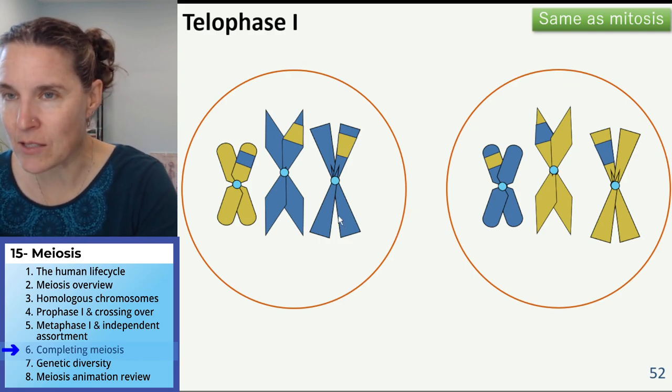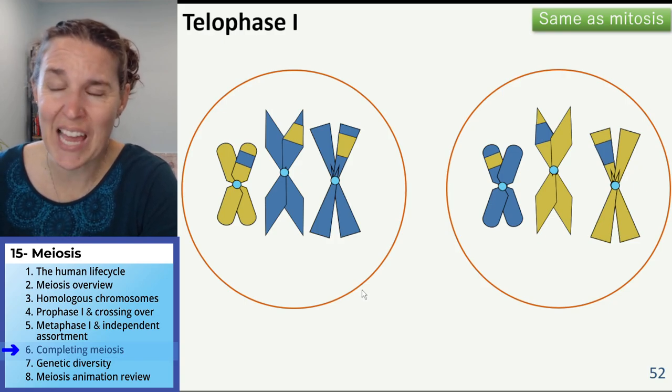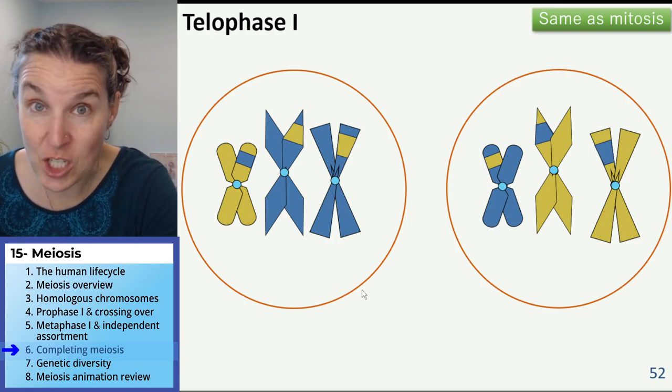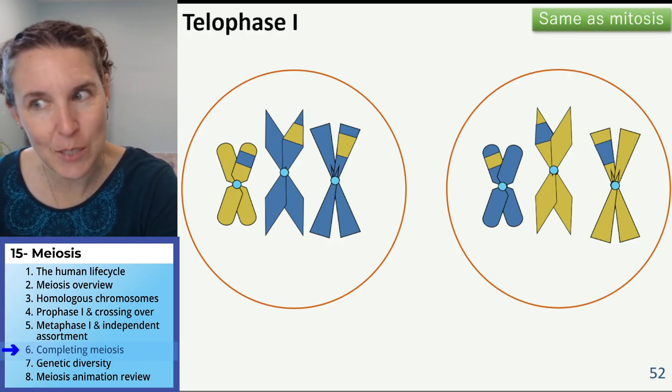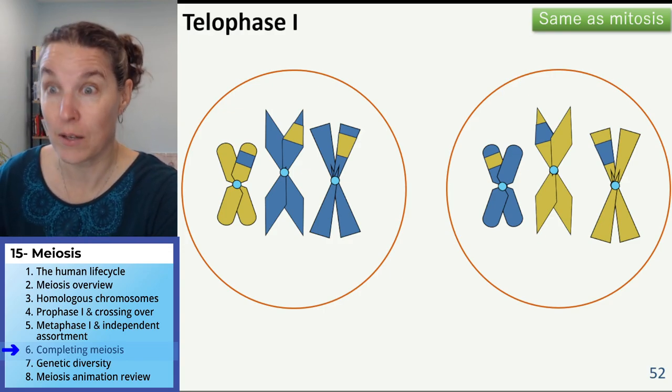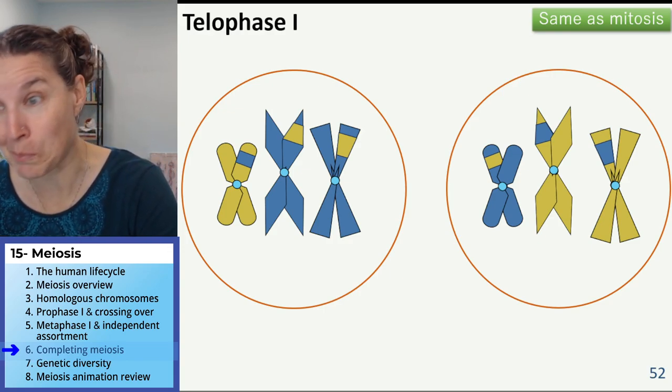They still have sister chromatids. So they have too much DNA, which is why we go through the next process. But who's going to split now? Sisters got to split.